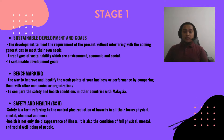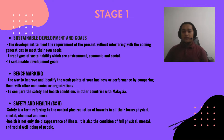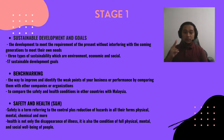Let's move on to Stage 1, literature review. Firstly, we have sustainable development and goals. Sustainable development is basically development that meets the requirements of the present without interfering with coming generations' ability to meet their needs. There are 3 pillars of sustainability: environment, economic, and social. And there are 17 sustainable development goals that have been set by the United Nations in 2015.